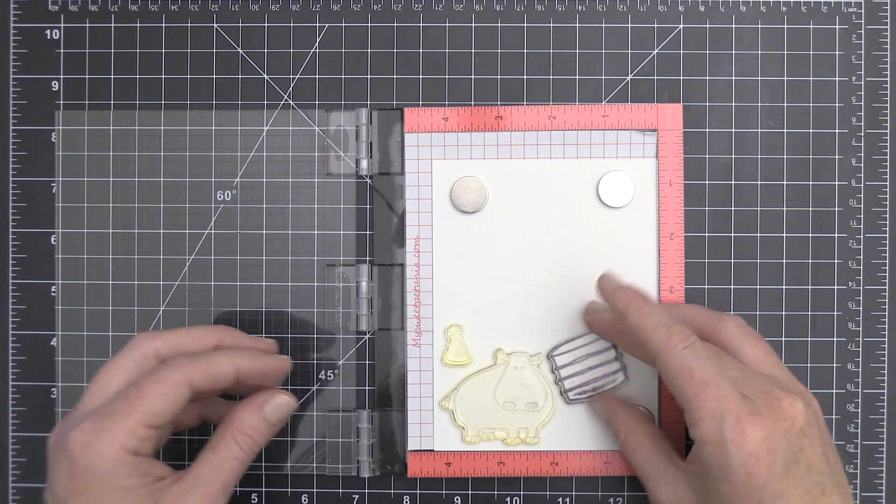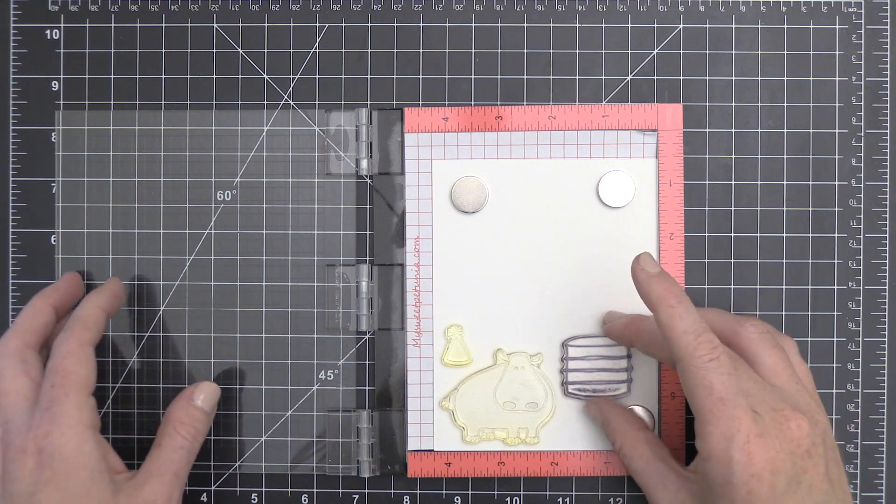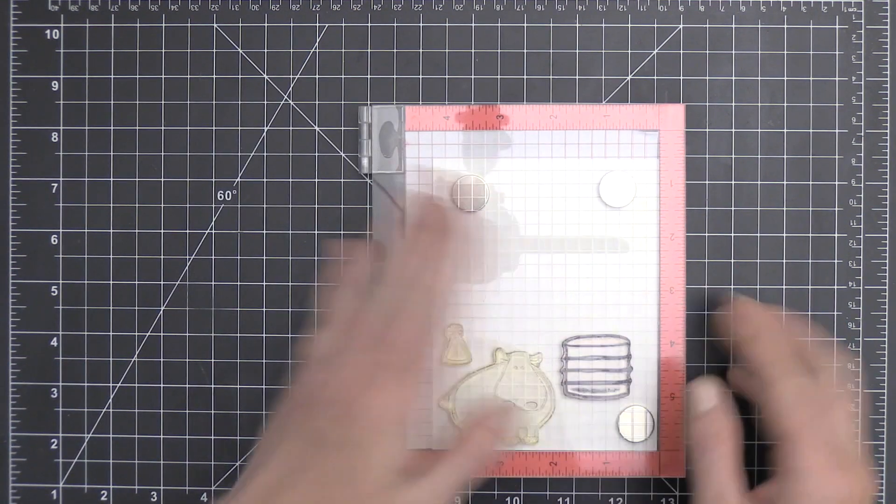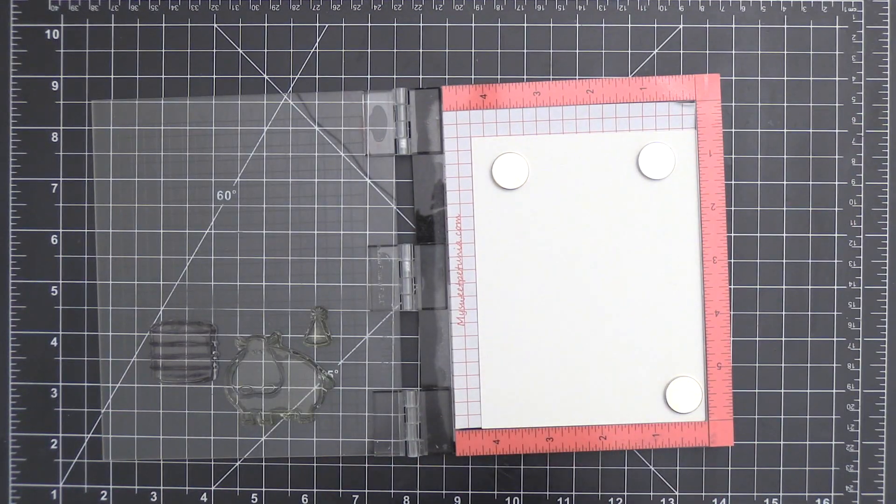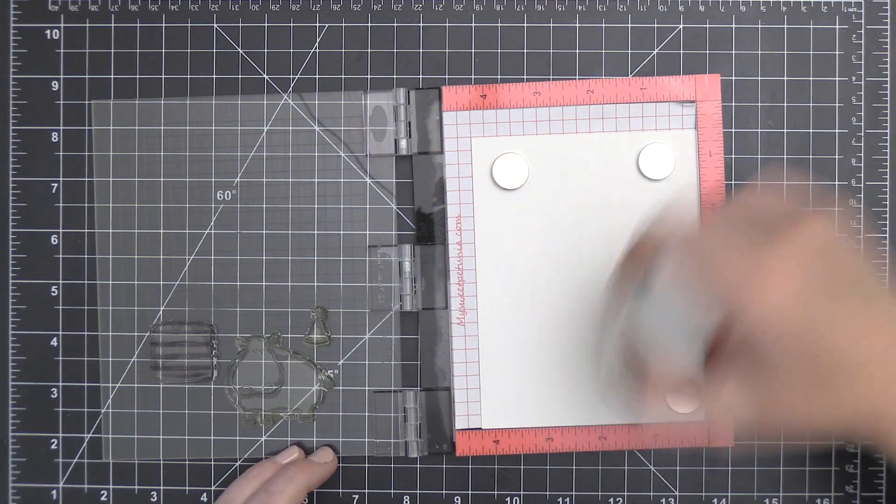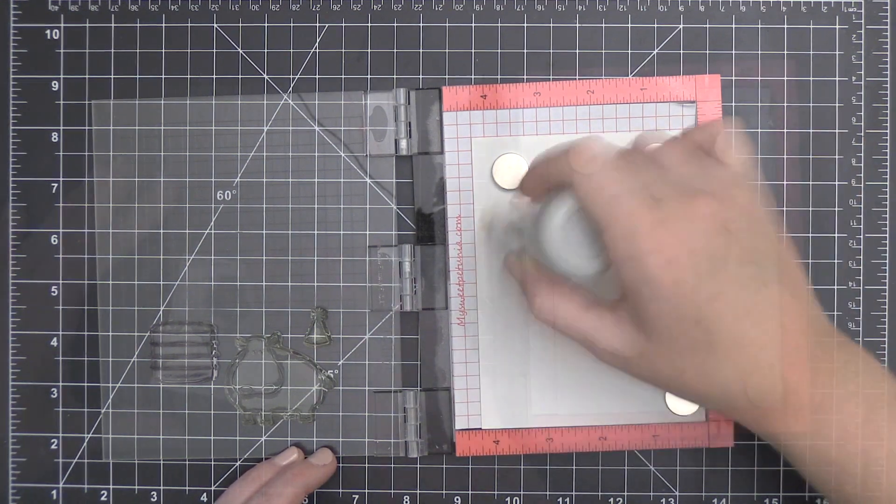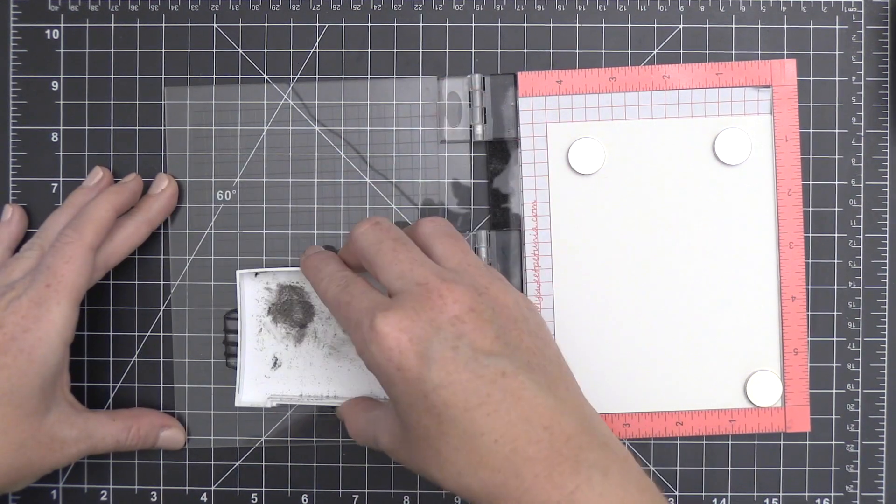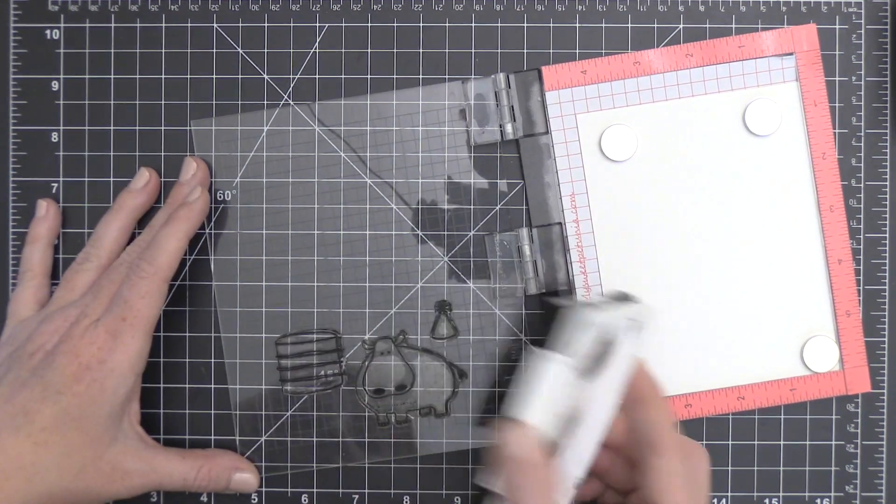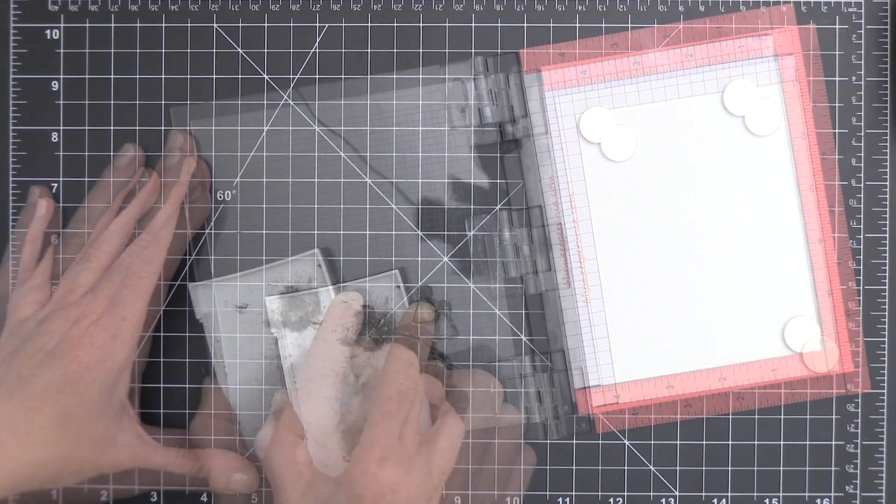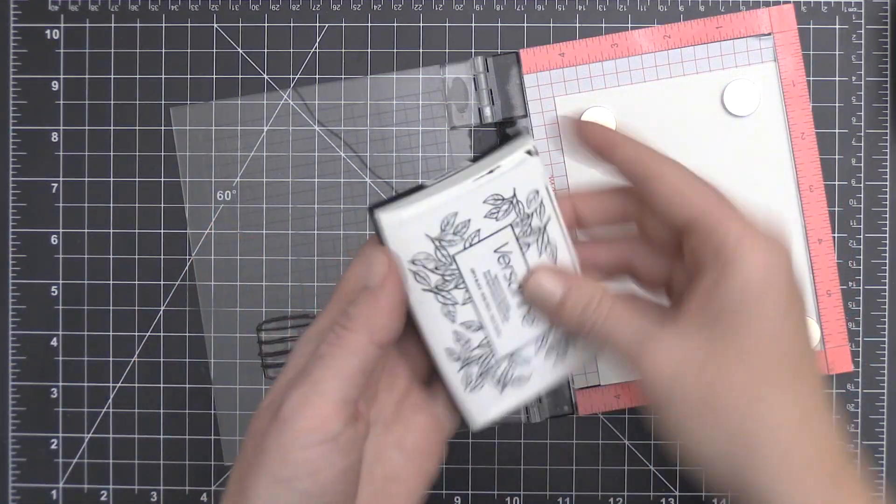For the stamps today, I'm going to be using the Essentials by Ellen Wish Big stamp set. I thought it would be so much fun to have this hippo kind of charging towards this birthday cake. I think that's what I would be doing at a birthday party, get me the cake charging towards it.